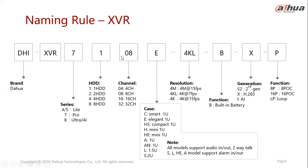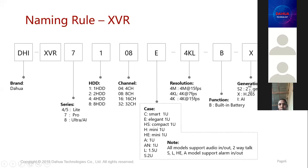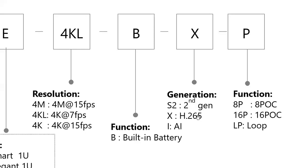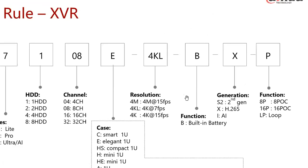The first value in the model name indicates the HDD, and the next value indicates the number of channels, followed by other functions such as AI generation. If you have an H.265 compression technology XVR and an H.264 camera, you need to match compression technologies. H.265 models can support H.264, but H.264 recorders cannot support H.265.